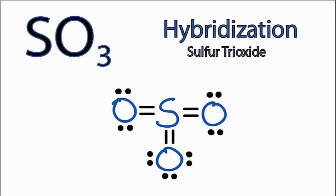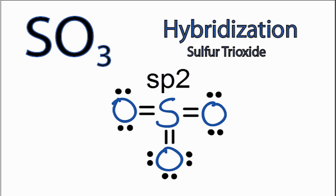Let's start by looking at the hybridization on the central sulfur atom. There are three sigma bonds attached to the central sulfur atom, which means we have three regions. With three regions, we have an s and two p orbitals being hybridized, making it sp2 hybridization.